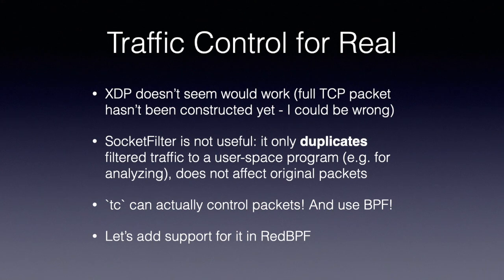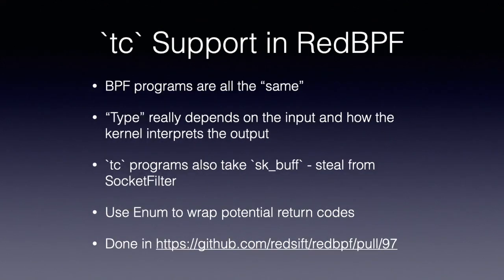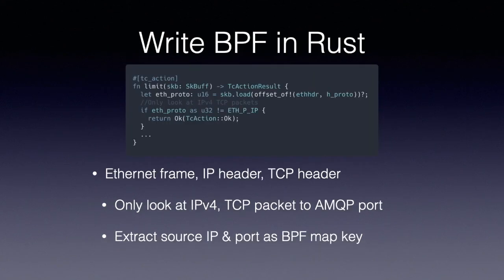After some searching, I found that the Linux traffic control, or TC subsystem, can actually drop packets, and it can also use a BPF program to make such decisions. All we need to do is make WriteBPF able to generate such programs, which turns out to be relatively easy. In fact, all BPF programs are the same — they use the same set of instructions, so it's really the input and output that defines the type of a BPF program. TC programs take the same input as socket filter. You can see the full change in the linked PR. With the PR merged, we can just use this TC action to mark a normal Rust function, and WriteBPF will do its magic to build a BPF program out of your Rust code.